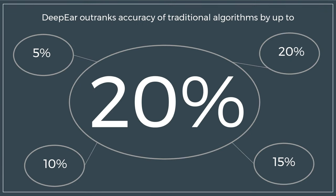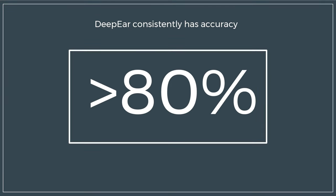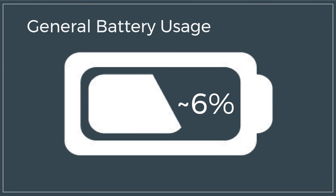On average, DeepEar makes absolute gains of 5% in ambient scene background, 10% in emotion recognition, 15% in speaker identification, and 20% in stress detection over the traditional model. DeepEar offers higher average accuracy of consistently at least 80%. It does all this while using only 6% of smartphone battery on a day of continuous use. DeepEar has helped pave the way for more sophisticated detection.